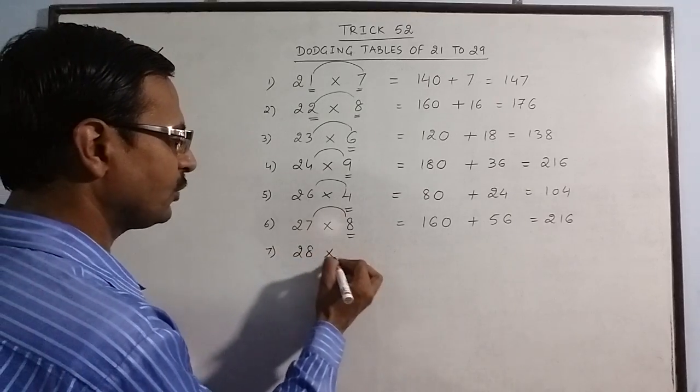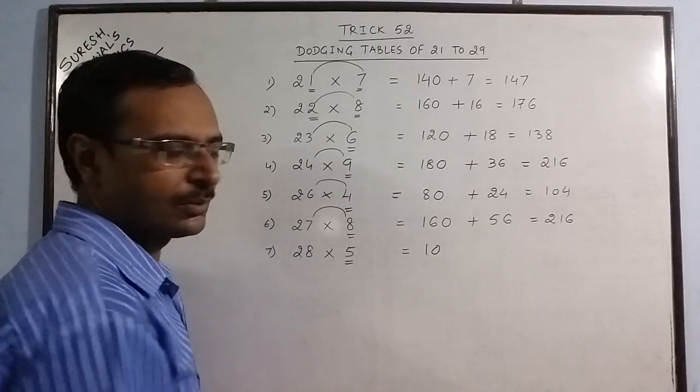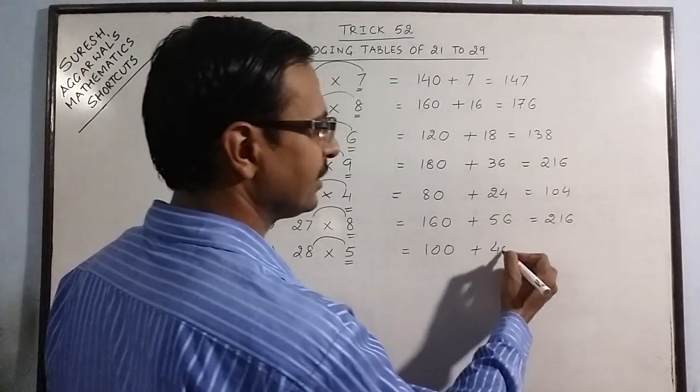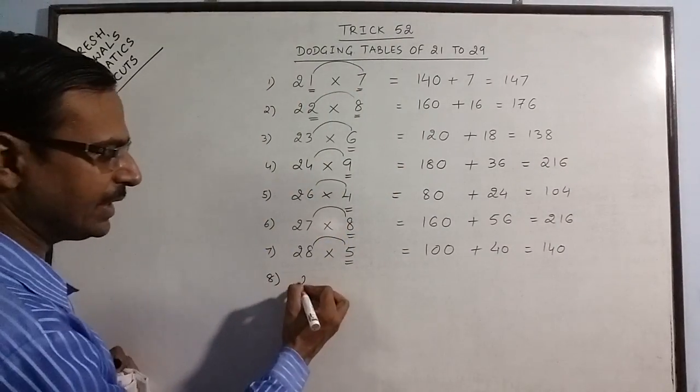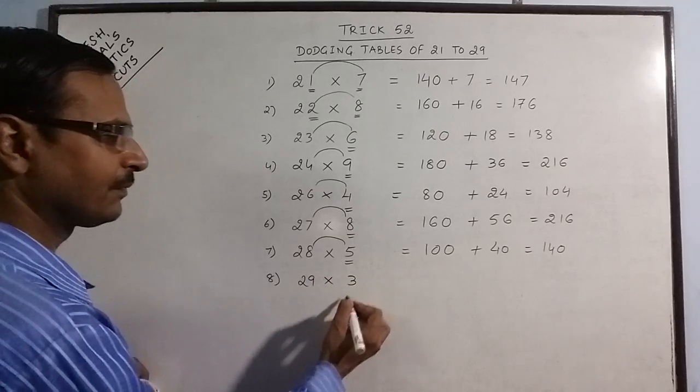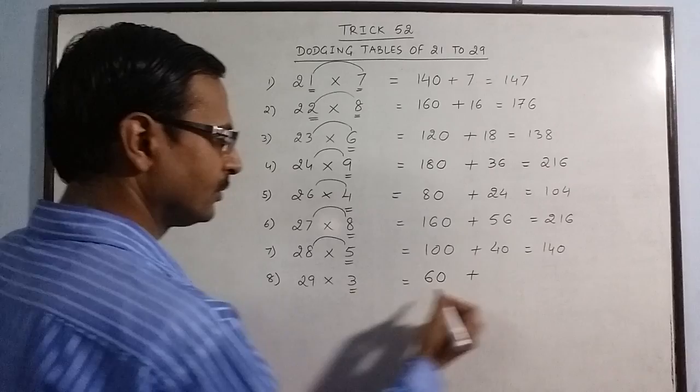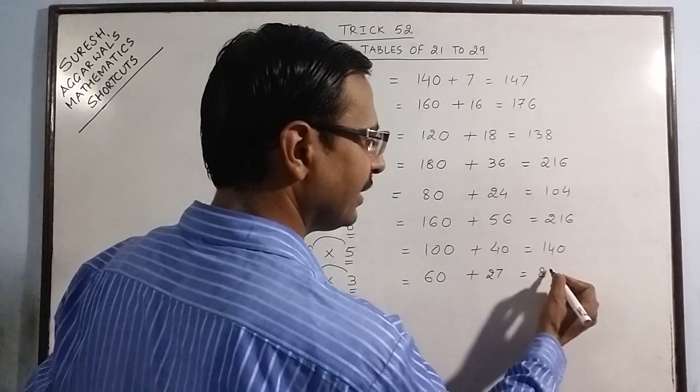Say 28 into 5: 5×2 is 10, put a 0, 5×8 is 40, so 140. More examples: so we have 29 into 3. Double of 3 is 6, put a 0, 9×3 is 27, add: 87.